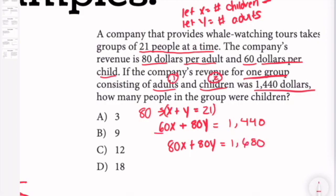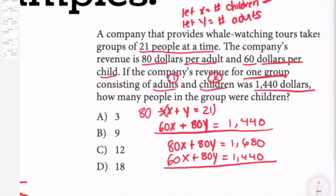So I have 60x + 80y = 1,440. Now I have my system of equations.